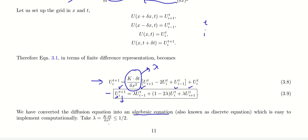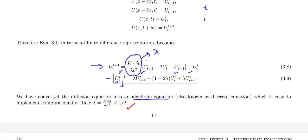Here, lambda — that is k times delta t divided by delta x squared — must be less than or equal to one half. This is due to stability reasons. We will discuss stability of this type of method in later episodes. For now, just keep in mind that lambda should be less than or equal to half.